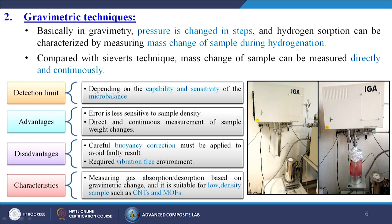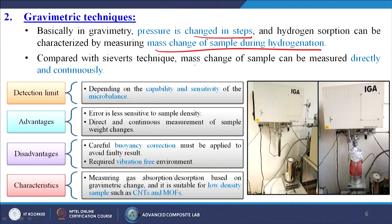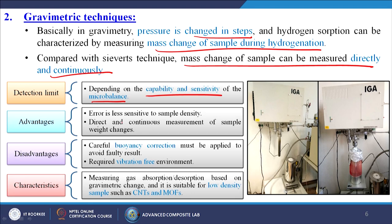The gravimetric technique: pressure is changed in steps and hydrogen sorption can be characterized by measuring the mass change of the sample during hydrogenation — that is, the incorporation of hydrogen inside the system. Compared with the Sieverts technique, the mass change of the sample can be measured directly and continuously. Detection limit depends on the capability and sensitivity of the microbalance. Advantages: error is less sensitive to sample density, direct and continuous measurement. Disadvantages: careful buoyancy corrections must be applied; requires a vibration-free environment. It is suitable for low-density samples such as carbon nanotubes or MOFs (metal organic frameworks).